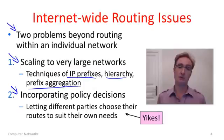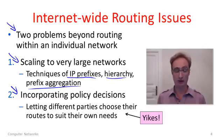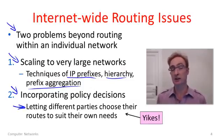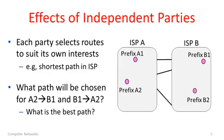The other issue, unique to multiple parties, is that we need to incorporate what are called policy decisions. Each different party might have their own idea about what constitutes a good route, and they want to choose routes or portions of routes to suit their own needs — described according to a policy. Having different parties with different preferences can lead to some strange effects, so let's look at the kinds of things that can and do happen in the internet today.